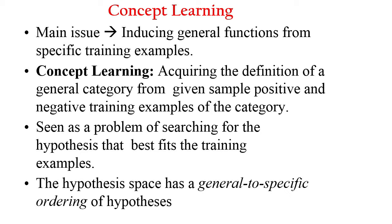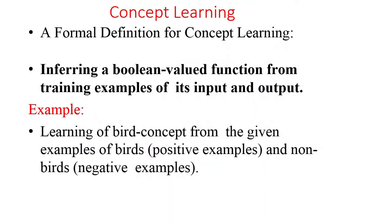For every training example we can find a hypothesis, and for the entire training space we may get a hypothesis space consisting of h1, h2, h3, and so on, represented as capital H. Finding a general hypothesis from the hypothesis space is a tedious task. A formal definition for concept learning is: inferring a boolean-valued function from training examples of its input and output — the function may be true or false, correct or wrong, yes or no.